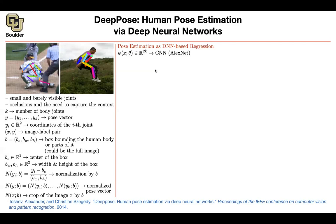Your neural network — which could be as simple as AlexNet — takes an image as input, is parametrized, and outputs a 2K-dimensional vector. Assuming the network is trained on normalized data, at inference you normalize the input image, push it through the convolutional neural network, and get normalized pose vectors back.